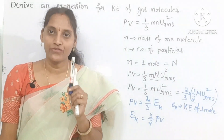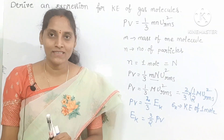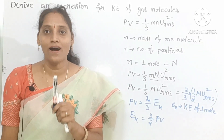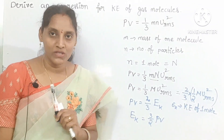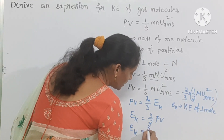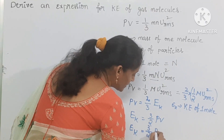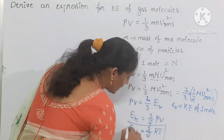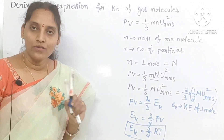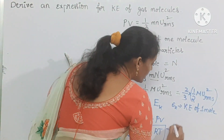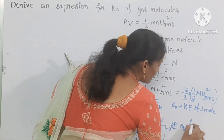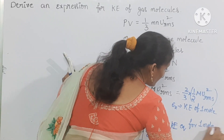But we already know from the ideal gas equation, for 1 mole, PV equals RT. So you can substitute that here: E_K equal to 3 by 2 RT. This equation is the kinetic energy equation for 1 mole of molecules.